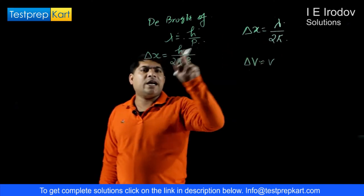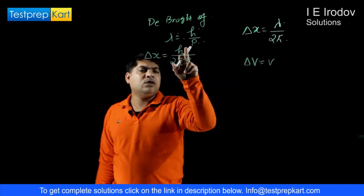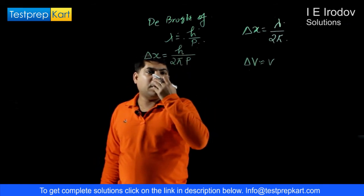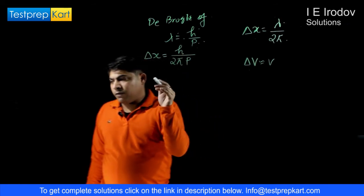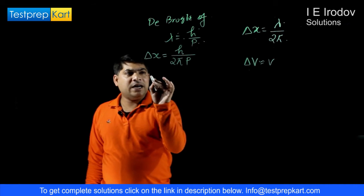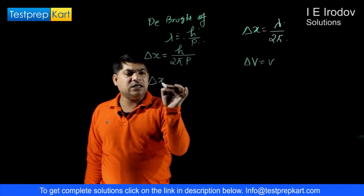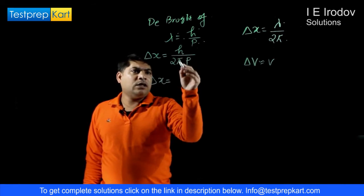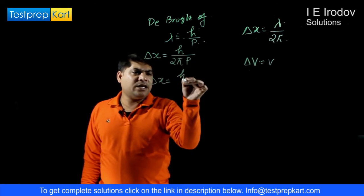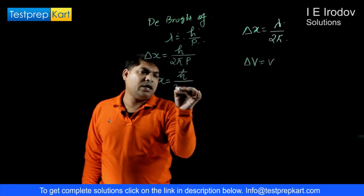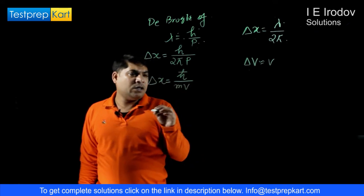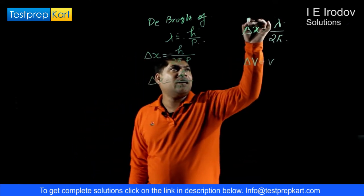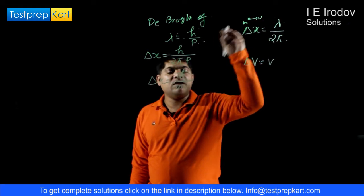From these two equations we can write delta x equals h over 2 pi p. From here we can write delta x equals, this h over 2 pi can be written as h bar and p can be written as m into v. Suppose this particle having mass m and velocity v.